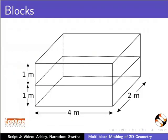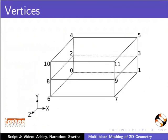The geometry is divided into two blocks as shown in the figure. There are 12 vertices and they are numbered as shown. Note that the vertex numbering starts from 0. Let me switch back to the blockMeshDict file.